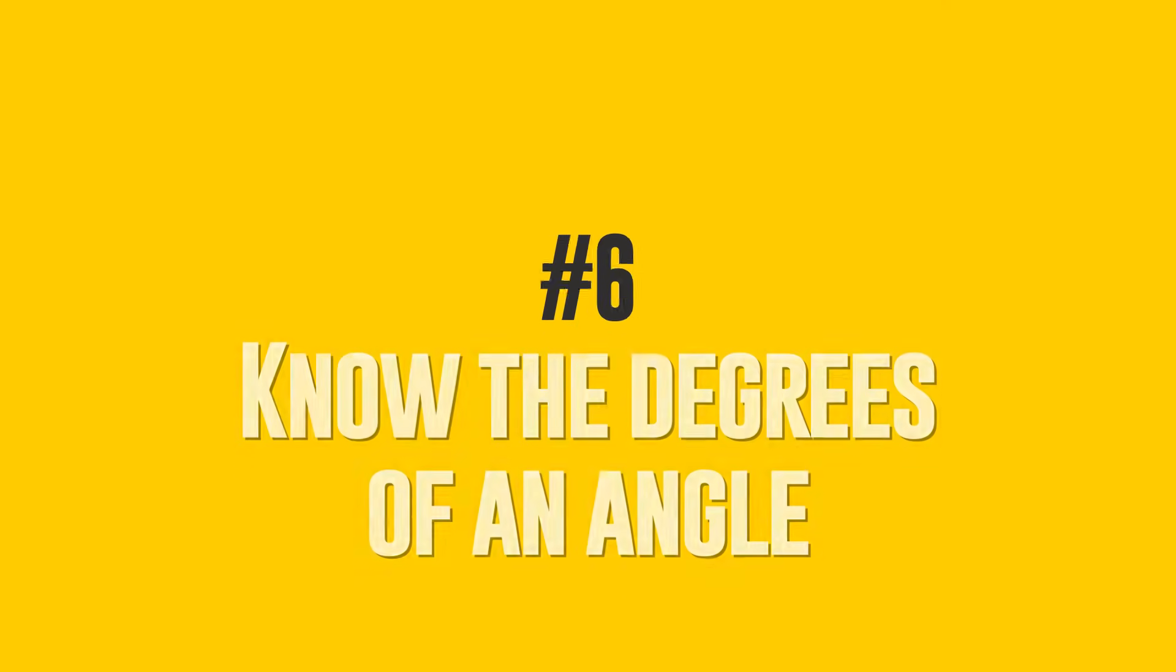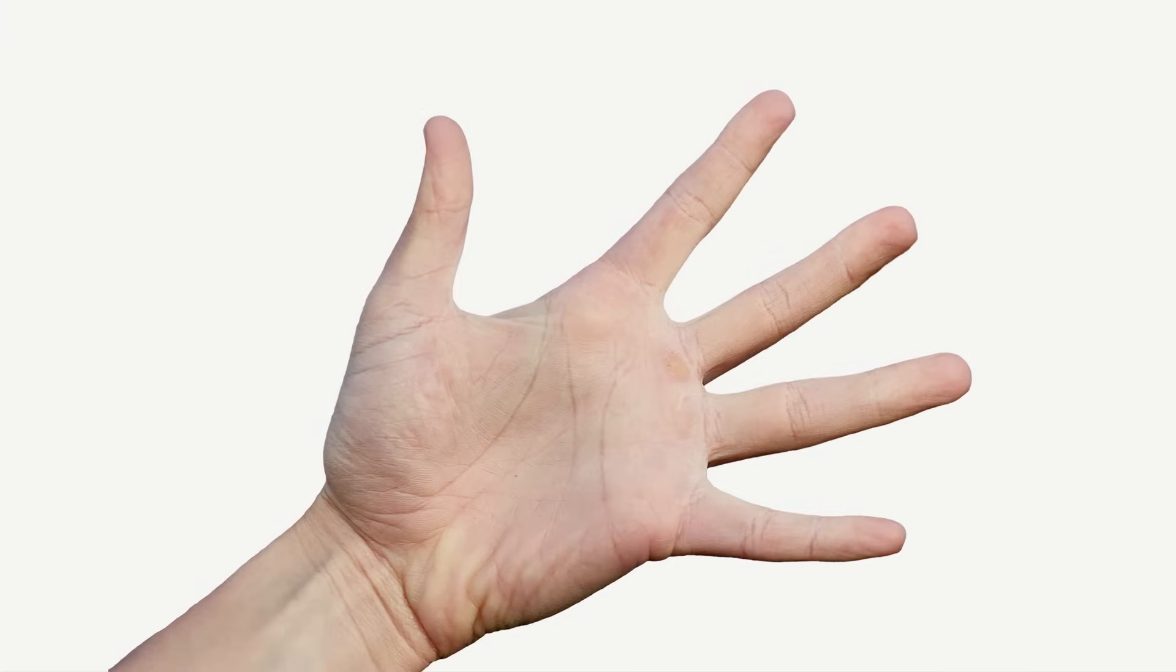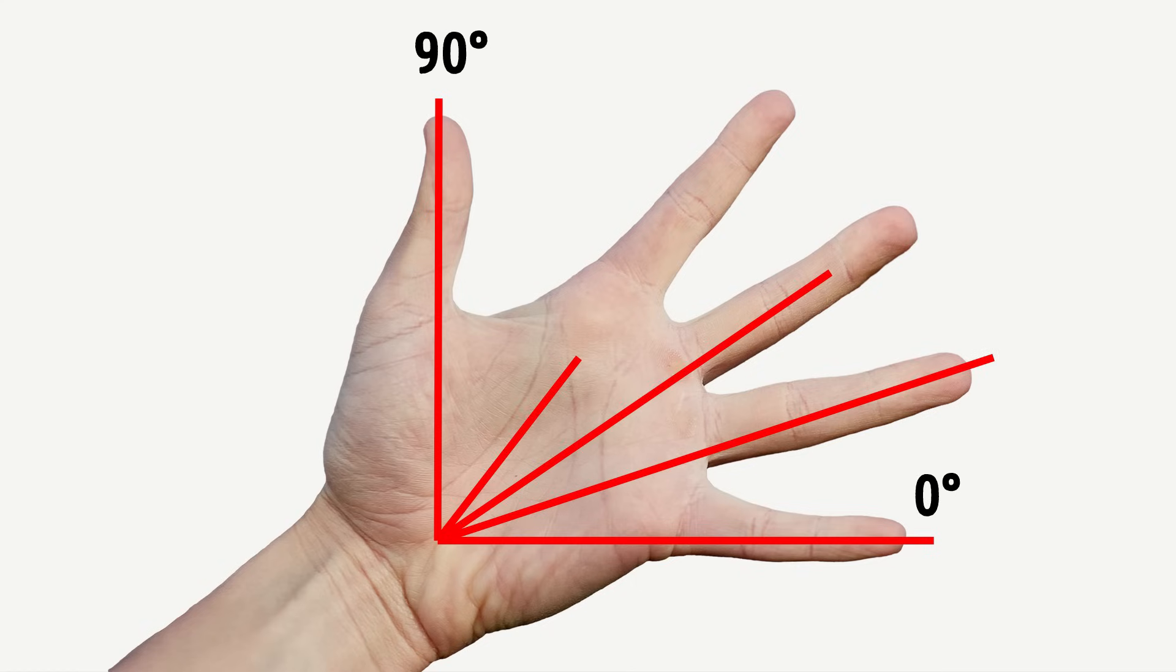Number 6: Know The Degrees Of An Angle. Spread your fingers as much as possible and put your palm on a surface, the angle of which you want to measure. The little finger should lie on the bottom side, meaning 0 degrees. The angle between the thumb and little finger is 90 degrees. The angles between the little finger and other fingers are, respectively, 30 degrees, 45 degrees and 60 degrees.